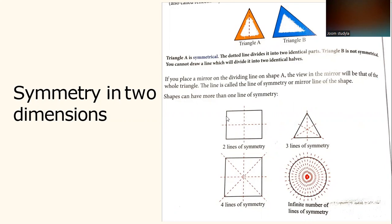Shapes can have more than one line of symmetry. The square has four lines of symmetry. The triangle has three lines of symmetry. The circle has an infinite number of lines of symmetry.